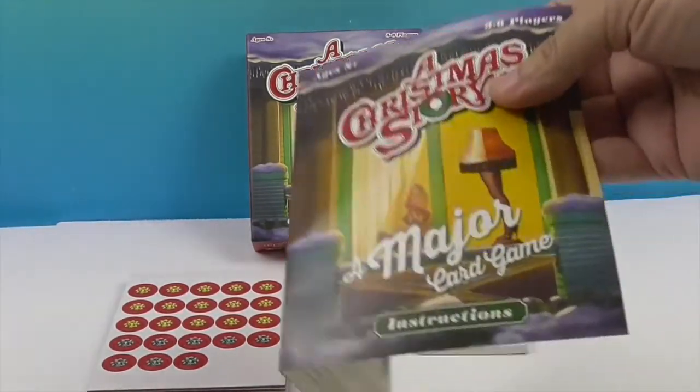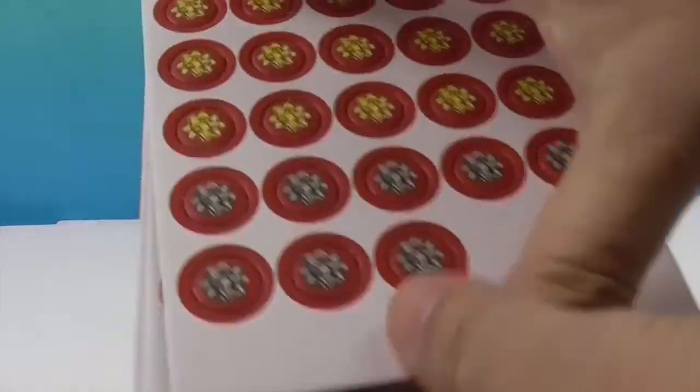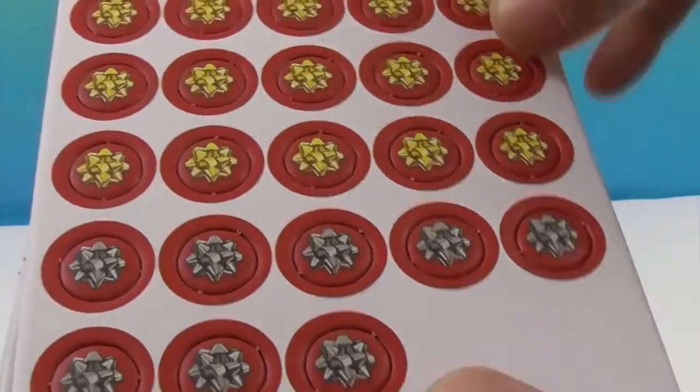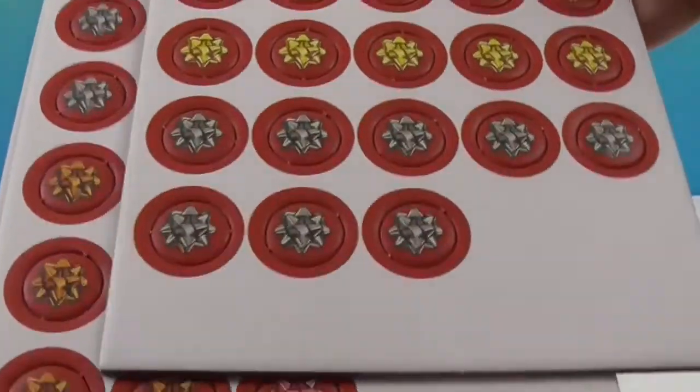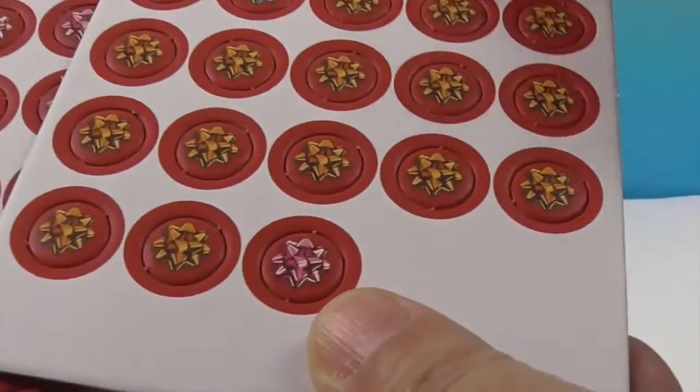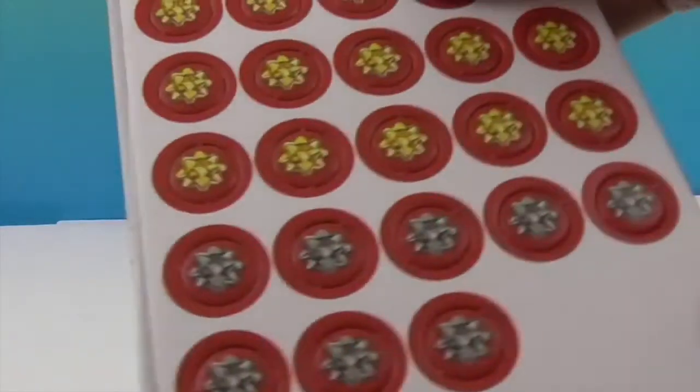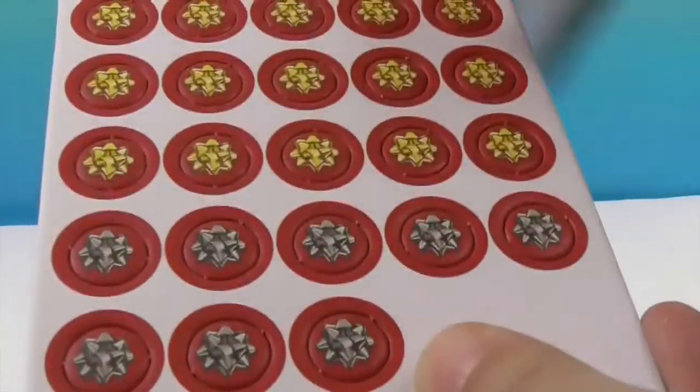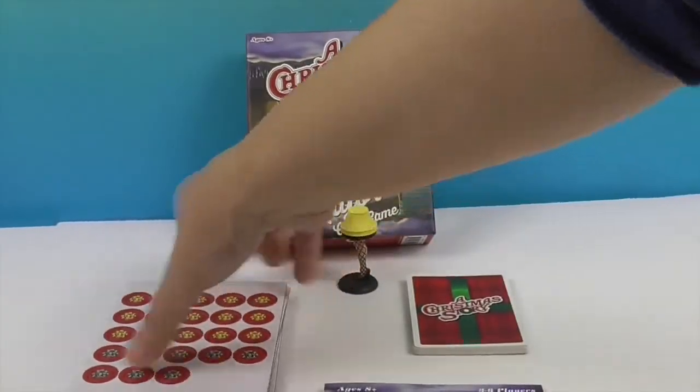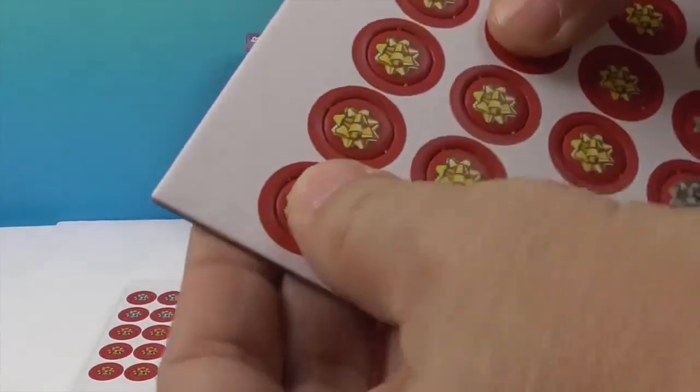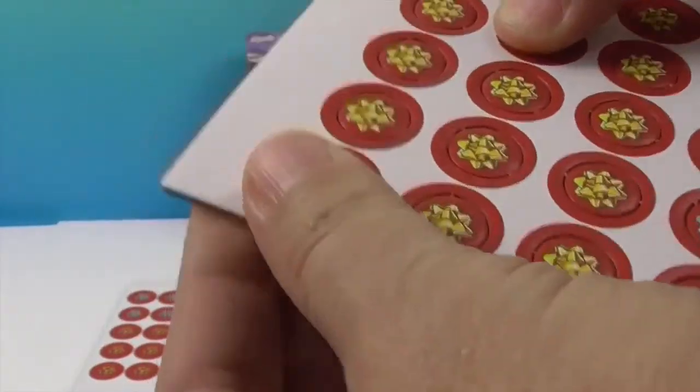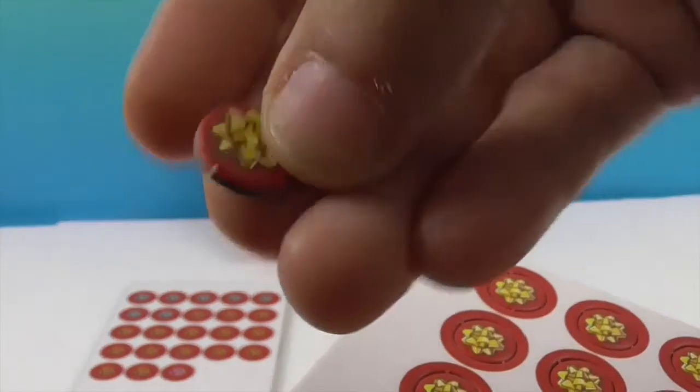We'll explain how to play but we just want to show you what comes inside. Of course the instruction booklet and these little peek tokens for peeking at the presents. They have six different colors like gold, silver, orange, pink, blue, green. Each player will have their own color for peeks of the presents so we can keep track of who's peeked at the card. You're going to punch these out and they look like a bow on both sides.